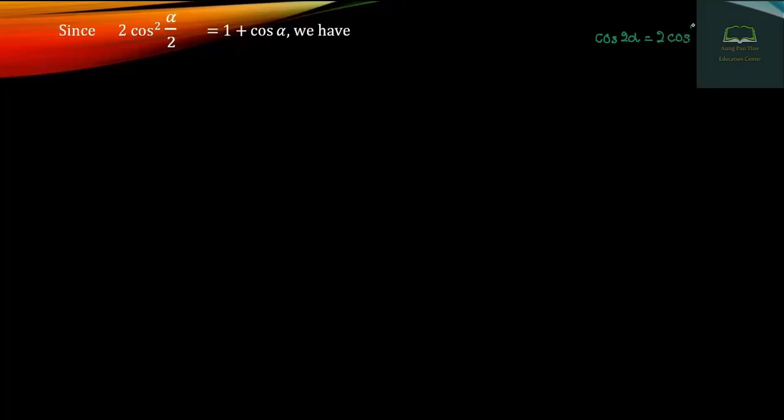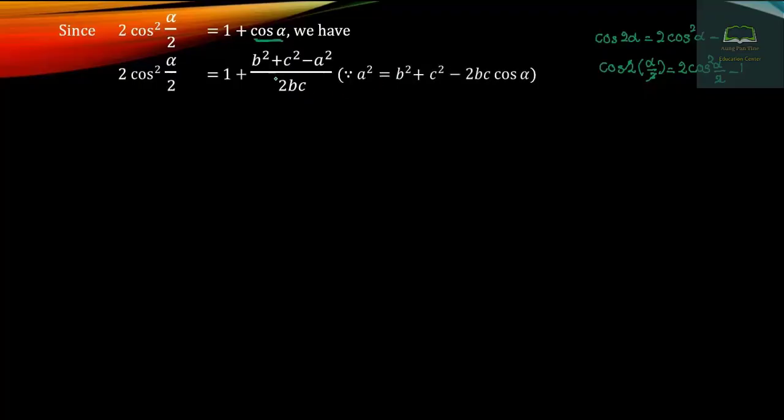cos²(A/2) is equal to 1 plus cos A. 2 cos²(A/2) is equal to 1 plus cos A. cos(A/2) equals square root of s(s minus a) over bc. 2 cos²(A/2) minus 1 is equal to 2, giving cos(A/2) equals square root of s(s minus a) over bc.